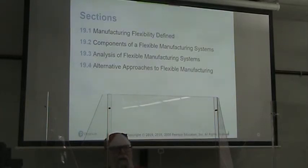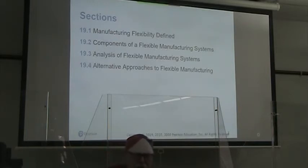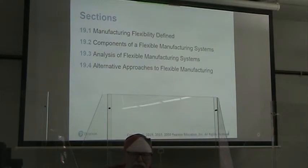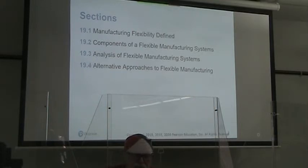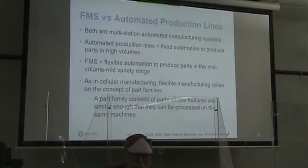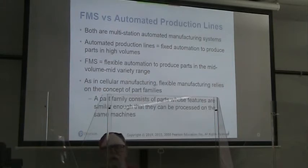Chapter 19: Multi-Station Manufacturing Systems that are automated for flexibility. We're going to go through defining manufacturing flexibility, what are the components of a flexible manufacturing system, analysis of flexible manufacturing systems, and alternative approaches to flexible manufacturing.